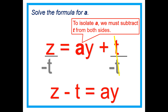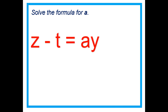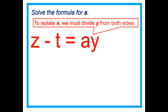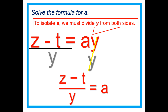We're not yet done because A is not yet isolated. To isolate A, we must divide Y from both sides. That cancels Y, giving us A equals Z minus T divided by Y.